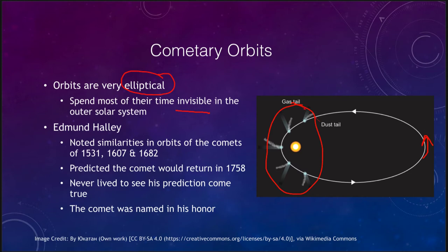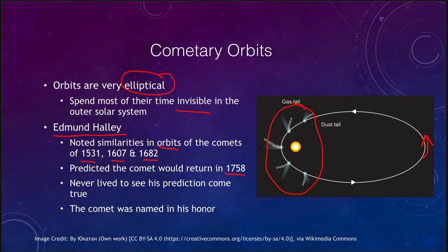We also know that comets come back over and over again, and Sir Edmund Halley discussed this. What he looked at was the orbits of comets that occurred in 1531, 1607, and 1682, and he noticed how similar their orbits were. So he made a prediction that the comet would return in 1758. Unfortunately, he died before that and was never able to see his prediction come true. But the comet was named in his honor as Halley's Comet, which comes back about once every 76 years and has been visible for over 1,000 years — it constantly comes back, comes in close to the sun, and then heads back out into the depths of the solar system.